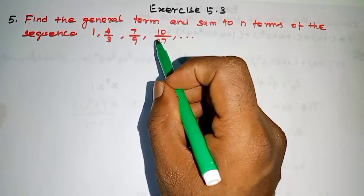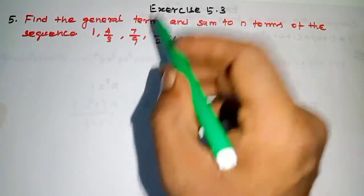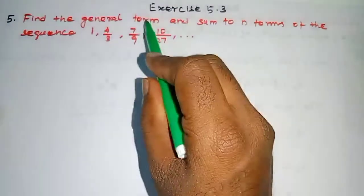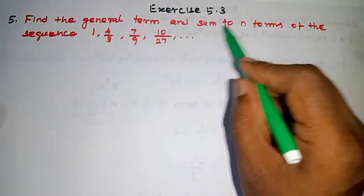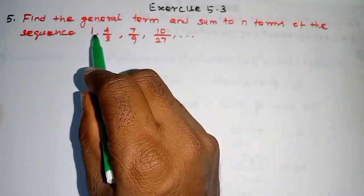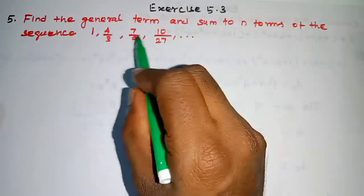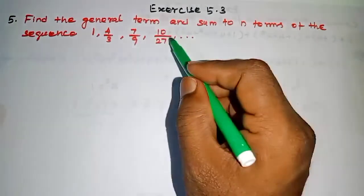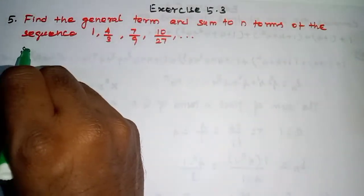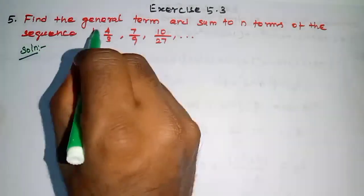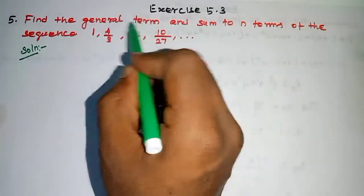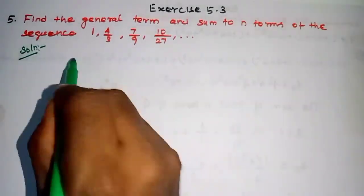Hi student, this is Selamo Max Tuition, 11th standard, Exercise 5.3, Question number 5. Find the general term and sum to n terms of the sequence. The sequence is 1, 4/3, 7/9, 10/27... and we need to find the nth term. First, we get the sequence in general form — this is called the nth term, Tn.